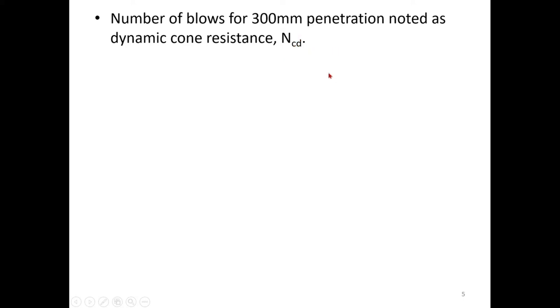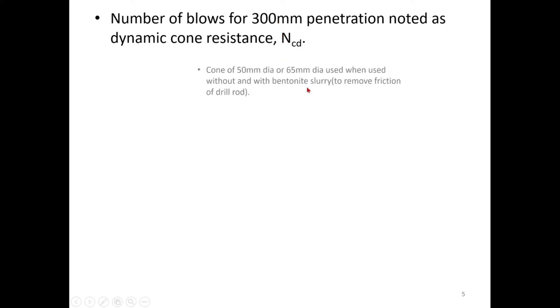In the case of SPT, it was 150 mm plus 150 mm, so total 300 mm. The N value means the number of blows required for 300 mm penetration using an open drive split spoon sampler driven by a 65 kg hammer free falling from 750 mm. Here also the loads are the same, but at the tip instead of a split spoon sampler, you are using a cone — again 300 mm penetration.